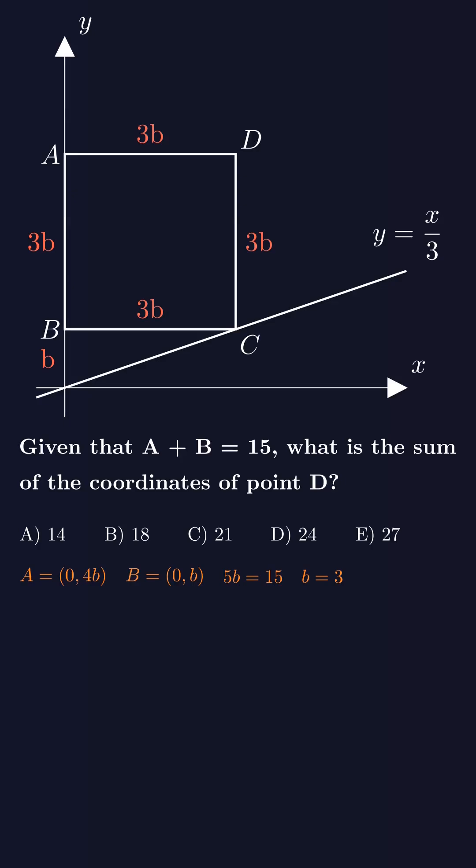Now what about point D? Its x-coordinate would be 3b, and its y-coordinate would be 4b. Since b equals 3, the sum of the coordinates of point D would be 3b plus 4b equals 7b, and that would be 21. So the correct answer is option C.